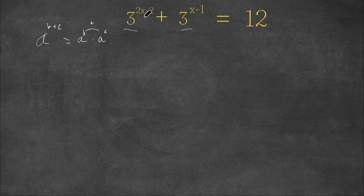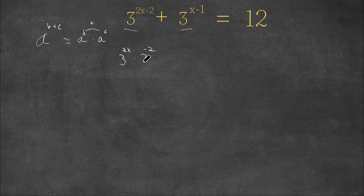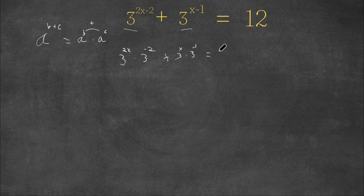So let's apply this to 3 to the power of 2x minus 2. This equals 3 to the power of 2x times 3 to the power of negative 2. And we add this to the same expansion of the second term: 3 to the power of x times 3 to the power of negative 1. All of this still equals 12.